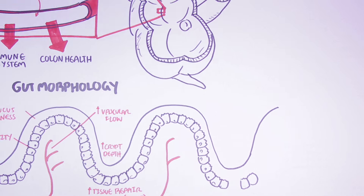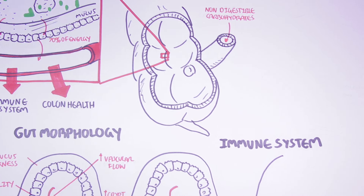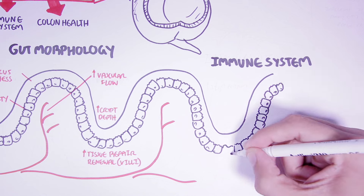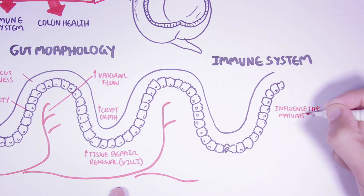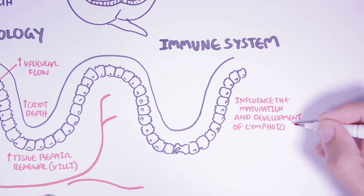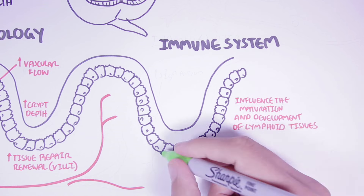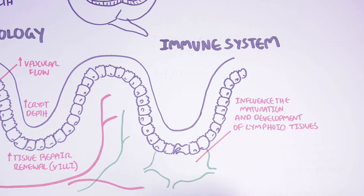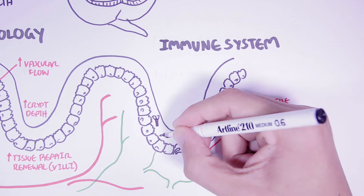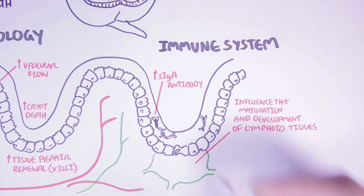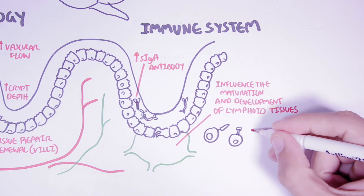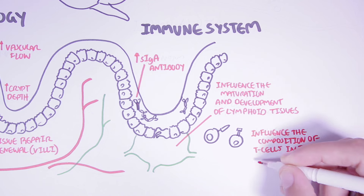The gut microbiota has also been shown to have an effect on the immune system. For example, it has been shown to influence the maturation and development of lymphoid tissues, such as Peyer's patches in the mucosal system, as well as the lymph nodes. The gut microbes are also able to regulate production of some immune mediators, including increasing concentration of secretory IgA antibodies. Recently, it has been found that the bacteria are able to influence the composition of T cells in the lamina propria.